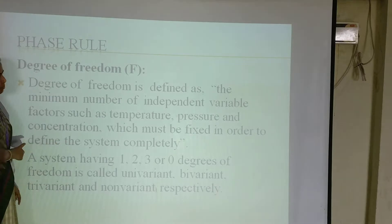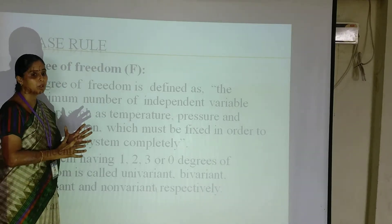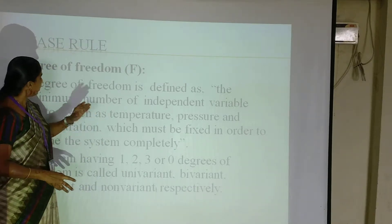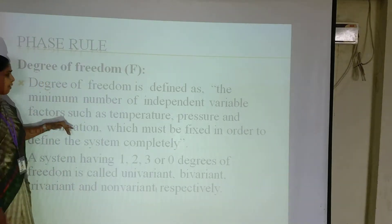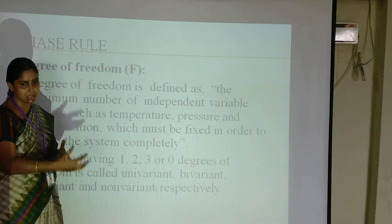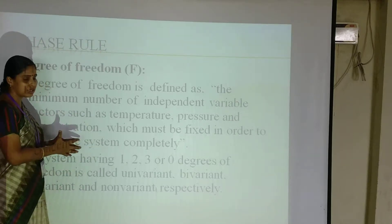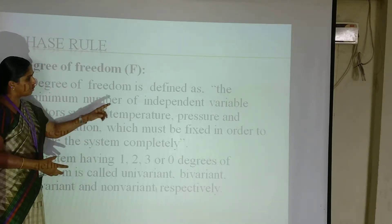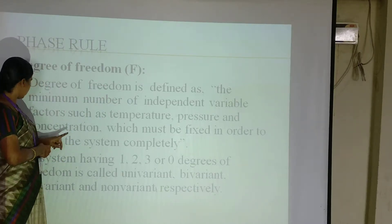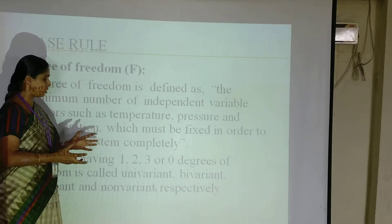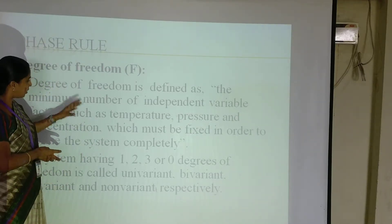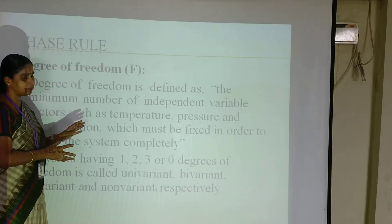Degree of freedom refers to what factors are involved in changing the state of the system. It is defined as the minimum number of independent variable factors. For example, temperature — when ice is melted to water, we need some temperature increase. Then pressure is needed in many reactions, and concentration is the biggest factor in all chemical reactions. These are considered as the important degrees of freedom.